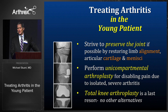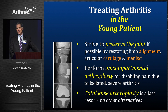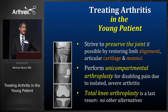Treating arthritis in the young patient is very challenging, but we have more tools in our toolbox than ever before. We should strive to preserve the joint, restore limb alignment, replace menisci and articular cartilage when possible. If not possible, perform unicompartmental arthroplasty for patients with disabling pain due to isolated monocompartmental arthritis. Total knee arthroplasty, in my opinion, is a last resort when there are simply no other alternatives — the results are very good and patients are happy, but you must warn them it might not last forever if given to a 31-year-old.